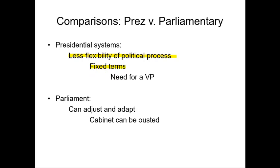The president has fixed terms. We also need a vice president in our system because of the importance and power of the president — the void cannot simply be left empty, whereas in parliament they can adapt and adjust. The prime minister comes out of the majority party and the ruling coalition — you're actually voting for the party, not the prime minister. So there's more ability to adjust and adapt, more flexibility in parliament. Also, the cabinet can be ousted once there has been a loss of confidence; that does not happen in our presidential system. Once appointed, they're there for the entire term of the president unless they step down.